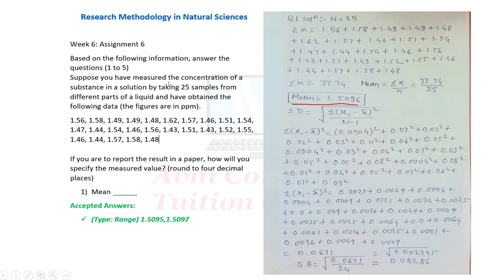Suppose you have measured the concentration of a substance in a solution by taking 25 samples from different parts of the liquid, and have obtained the following data — the figure in PPM. These are the sample values. If you are to report the result in a paper, how will you specify the measured value? Round to 4 decimal places.